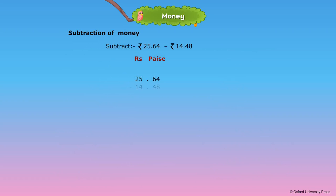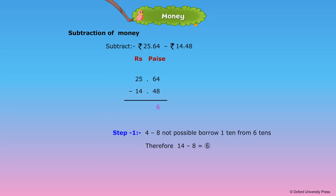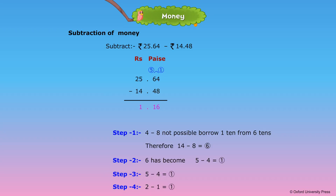Subtraction of money: we subtract money the same way as we subtract numbers. See the example given below. Step 1: 4 minus 8 not possible, borrow 1 from 6, therefore 14 minus 8 is equal to 6. Step 2: 6 has become 5, 5 minus 4 is equal to 1. Step 3: 5 minus 4 is equal to 1. Step 4: 2 minus 1 is equal to 1.